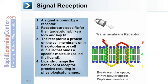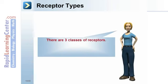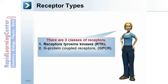Extracellular space, intracellular space, and the plasma membrane define a transmembrane receptor. There are three classes of receptors: receptor tyrosine kinases (RTK), G-protein coupled receptors (GPCR), and intracellular receptors.